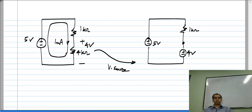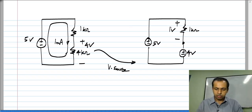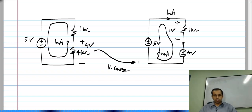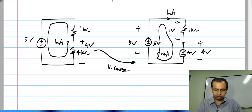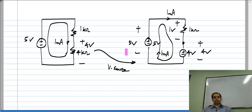We have to verify if the currents and voltages in the circuit have changed. Across the resistor we have a 1-volt drop — that is 5 volts minus 4 volts — so the current through this is 1 milli-amp. Just like before, 1 milli-amp flows in the clockwise direction through this loop. The voltage across the source is 4 volts and across the supply it is 5 volts. Comparing element by element, we see that no branch voltage or current has changed in the circuit.